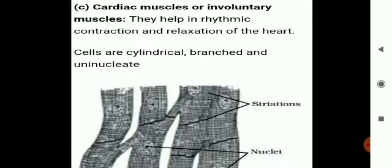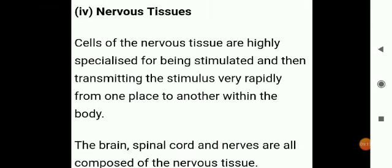Next are cardiac muscles, which are also involuntary. These muscles are exclusively present in the heart. They work rhythmically and tirelessly, contracting and relaxing endlessly from early embryonic stages until death. Cardiac muscles are striated and short, and they are branched.